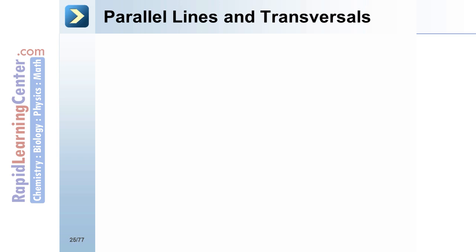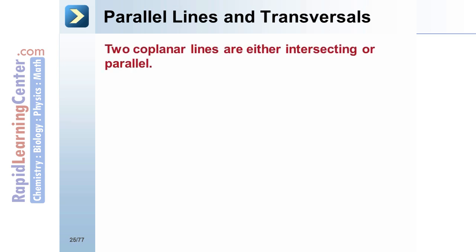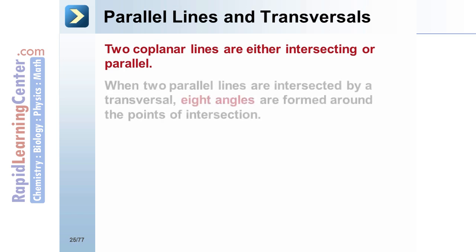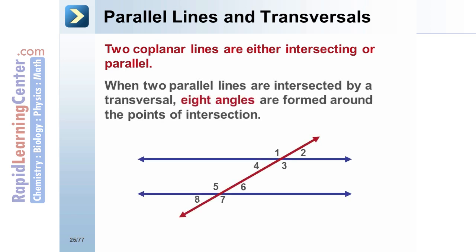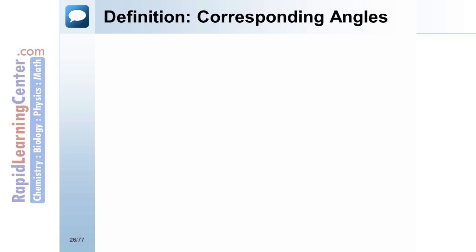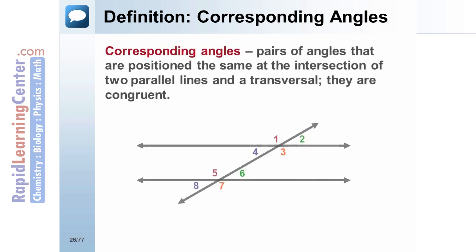Parallel Lines and Transversals. Two coplanar lines are either intersecting or parallel. When two parallel lines are intersected by a transversal, eight angles are formed around the points of intersection. Definition: Corresponding Angles. Corresponding angles are pairs of angles that are positioned the same at the intersection of two parallel lines and a transversal.